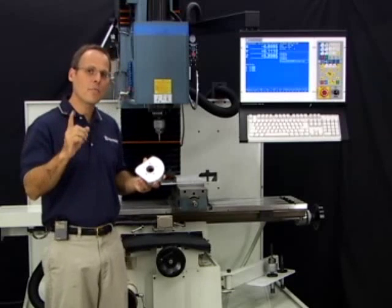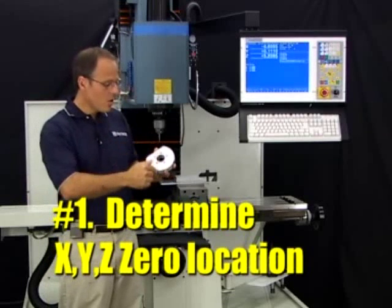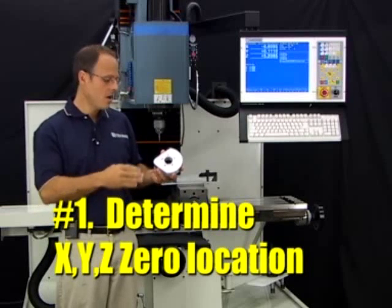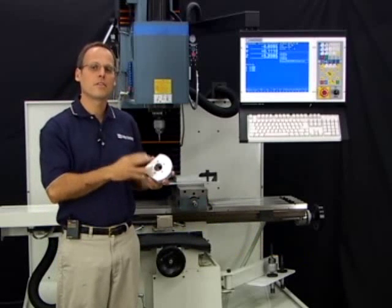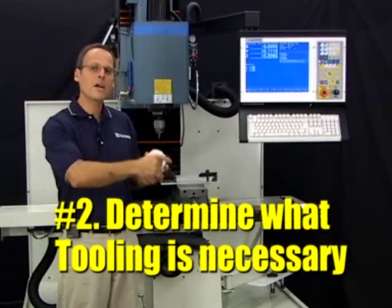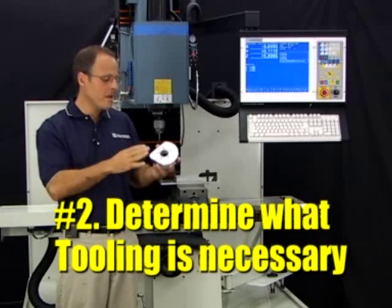The steps are, number one, determine where your x, y, zero position is going to be for your part. Number two, figure out what type and size of tools you're going to need to manufacture this part.